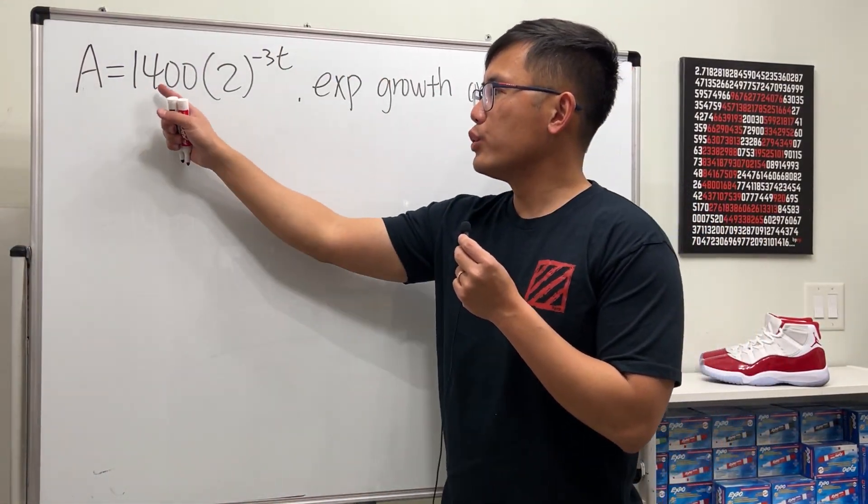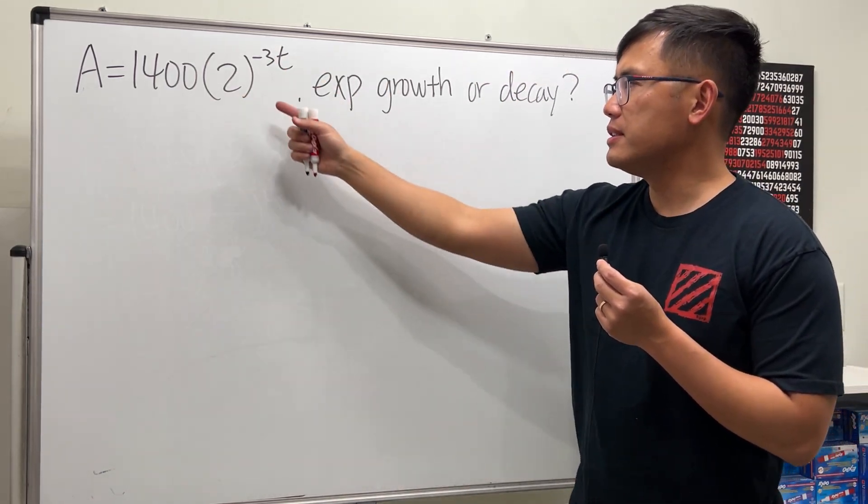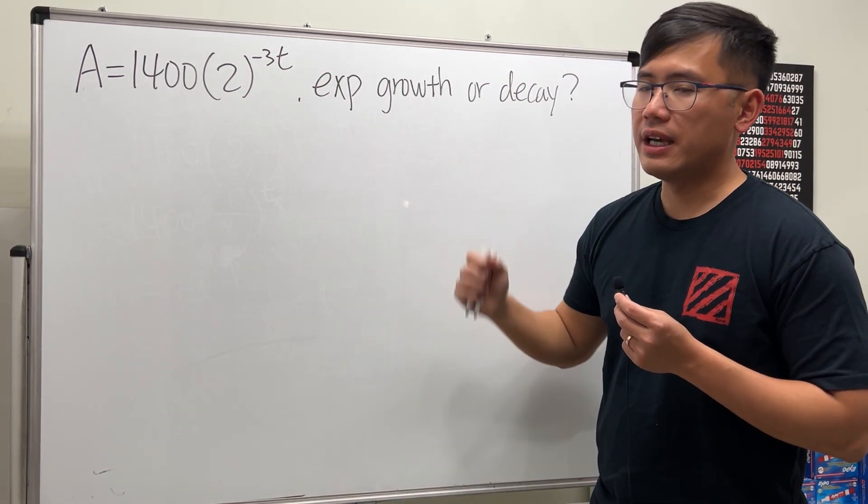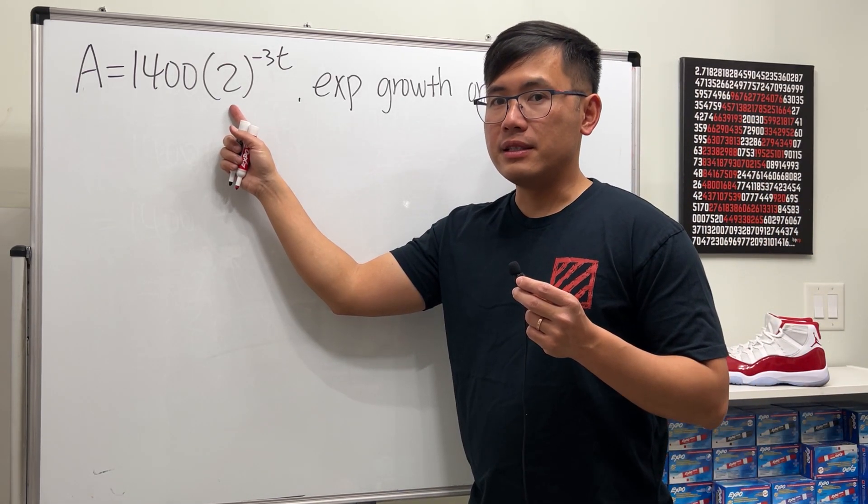Okay, here we're given A = 1400(2)^(-3t), and we're going to see if this is exponential growth or decay. Don't just look at the base 2 and say it's exponential growth - no, because we also have to pay attention to the exponent, especially when we have a negative.